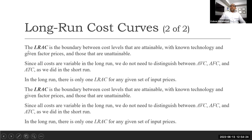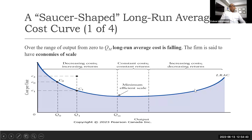We therefore focus only on the long run average total cost, which is the boundary between levels attainable with known technology and given factor prices and those that are unattainable. As mentioned, this is a saucer-shaped curve. Looking carefully, we can divide the entire saucer-shaped long run average cost curve into three distinct portions.